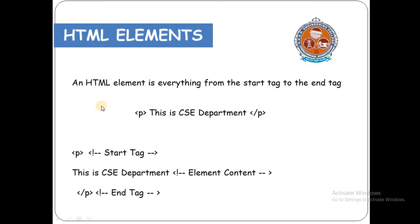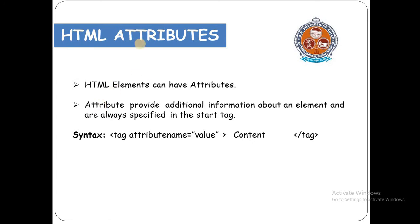We can have multiple elements in our HTML document, and an HTML document is nothing but a web page. HTML elements have attributes. Attributes are properties we give to an element. If we want to add some additional information to a particular tag, we give it an attribute. The syntax of an attribute is written in the starting tag, after the tag name: attribute name equals some value. Many tags will have special properties called attributes.